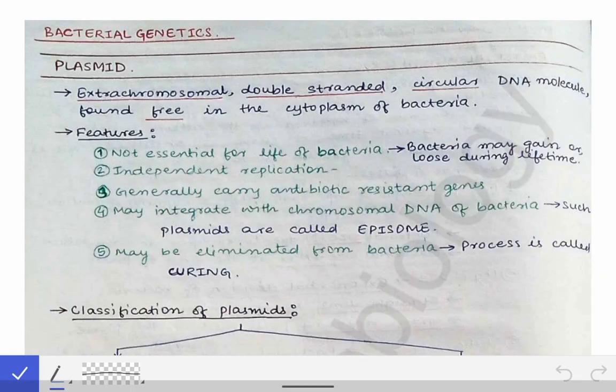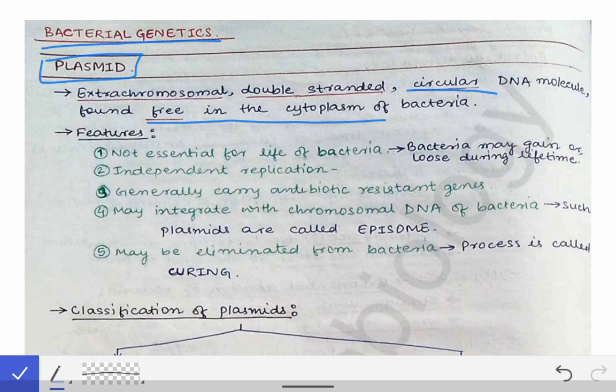We are going to talk about bacterial genetics. Our first topic is plasmids. Bacteria have their own chromosomal DNA, and other than that, there are some other DNA molecules they possess. Those extra-chromosomal, double-stranded, circular DNA molecules found free in the cytoplasm of the bacteria are called plasmids. The four key points in the definition are: extrachromosomal, double-stranded, circular, and found free in the cytoplasm.